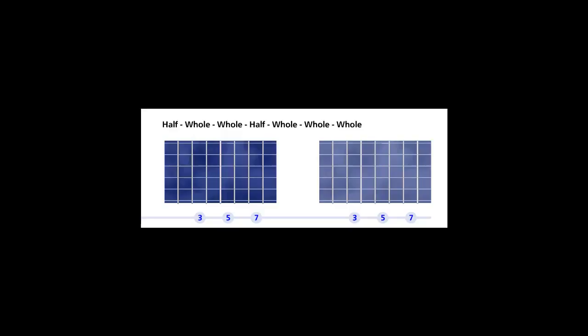The Locrian Mode 7 is created by the C Major Scale. The C Major Scale is a very special scale. The Locrian Mode 7 is the seventh degree of the C Major Scale.